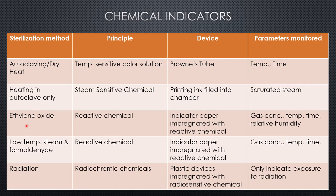For ethylene oxide gaseous sterilization, a reactive chemical indicator paper is used. This paper is impregnated with a reactive chemical which undergoes a distinct color change on reaction with ethylene oxide in the presence of heat. The color change occurs with heat, moisture, and gas. The parameters monitored are gas concentration, temperature, time, and relative humidity.